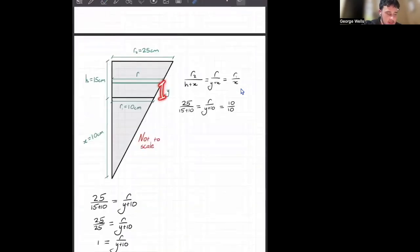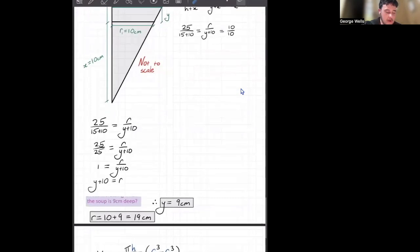our y is the depth of our soup. We want it when y is equal to 9 centimeters. Pretty much just that.